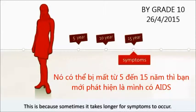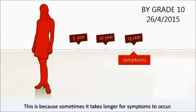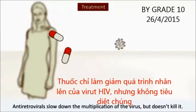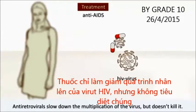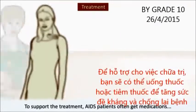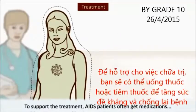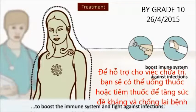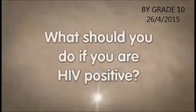This is because sometimes it takes longer for symptoms to occur. HIV and AIDS can be treated with medication but cannot be cured. Anti-retrovirals slow down the multiplication of the virus but don't kill it. To support the treatment, AIDS patients often get medications to boost the immune system and fight against it.